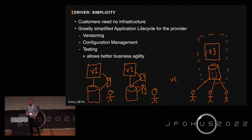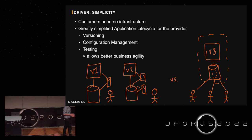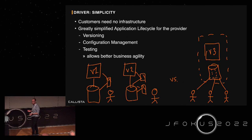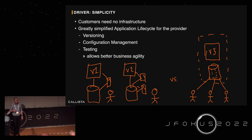There's a great simplification for the provider as well, in terms of a simplified application life cycle. You no longer have to deal with supporting multiple versions, legacy versions, or customer-specific configurations and differences between customers that make versioning, configuration management, and testing complex. Software as a service promises a simpler application life cycle, which in the end might lead to better business agility — that is, shorter lead time to provide value to end customers.